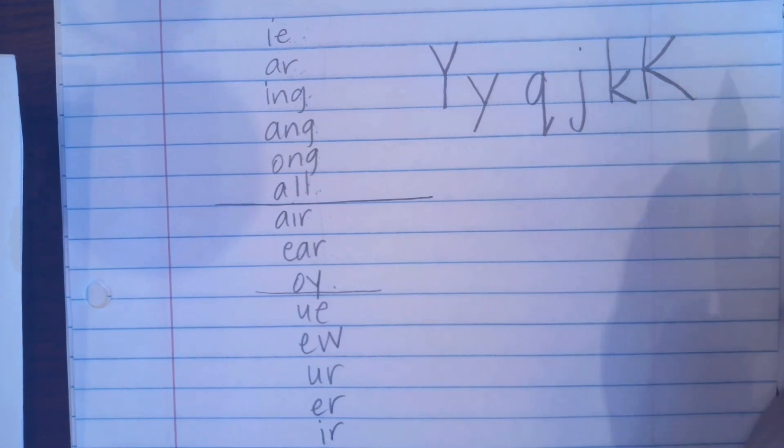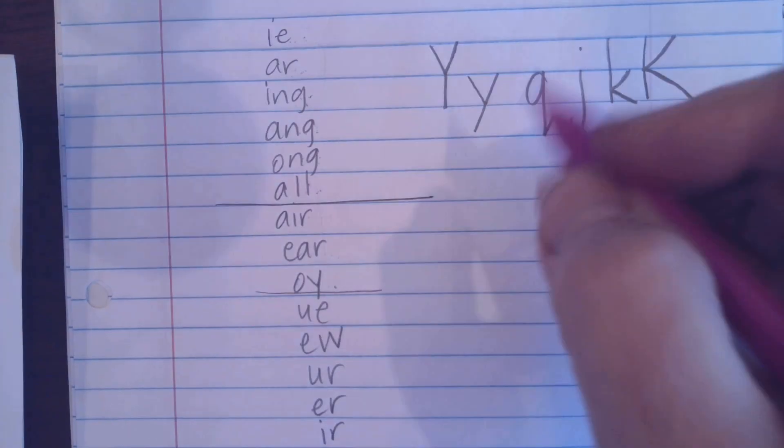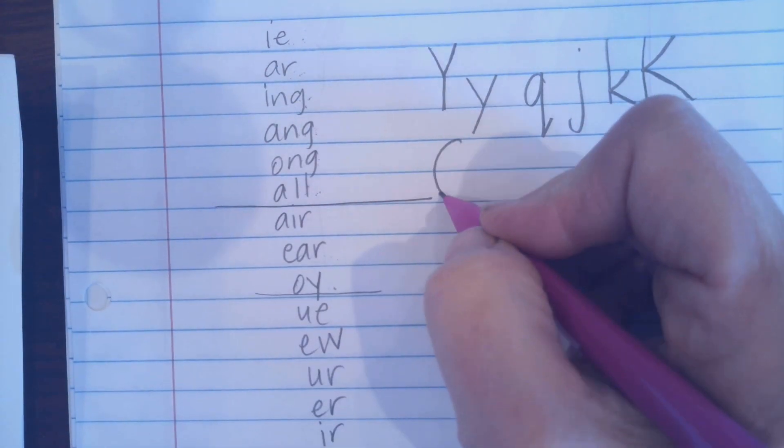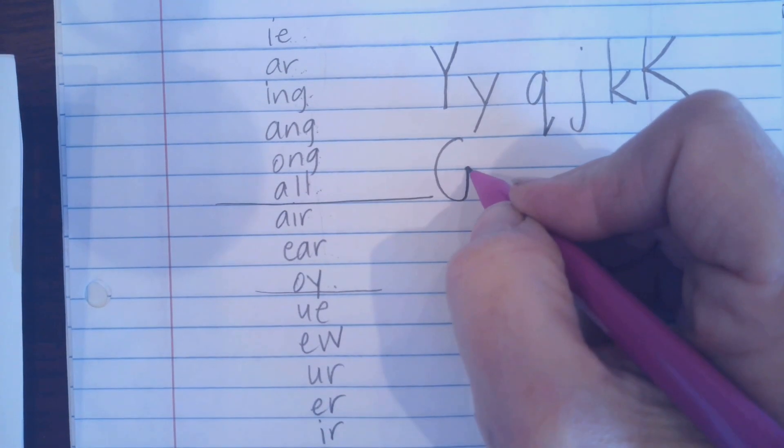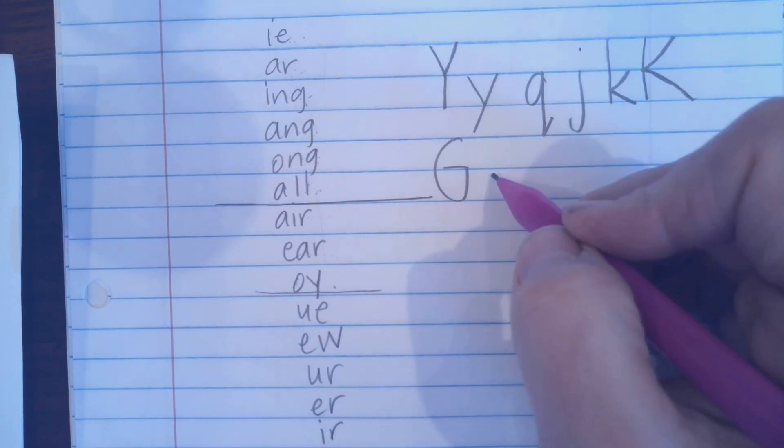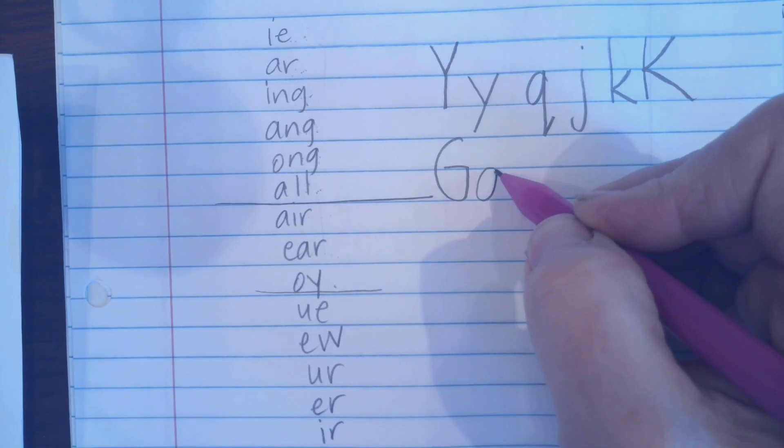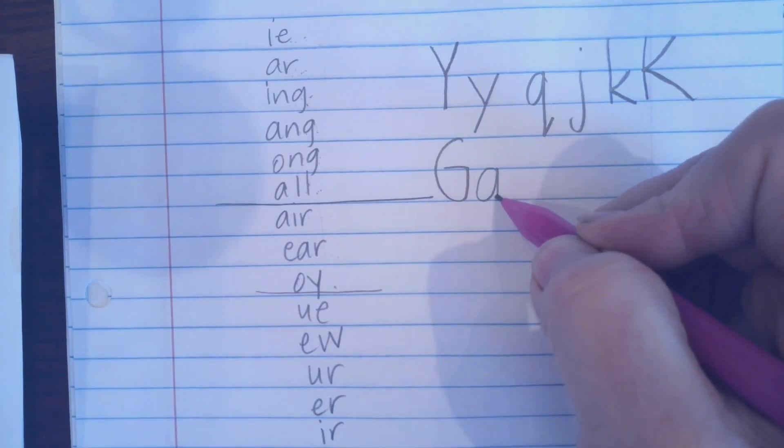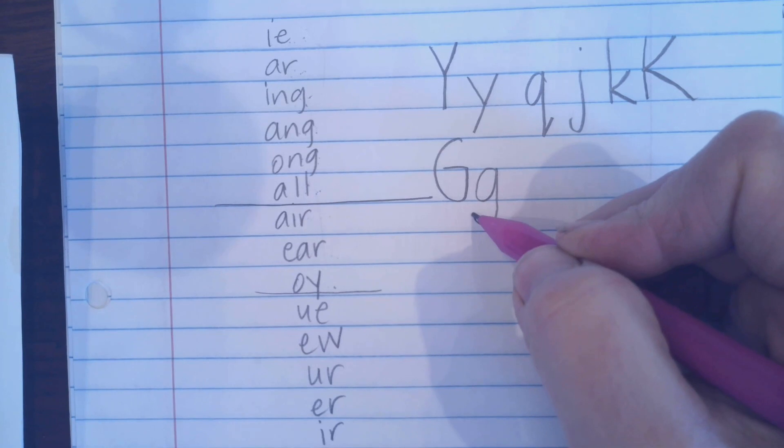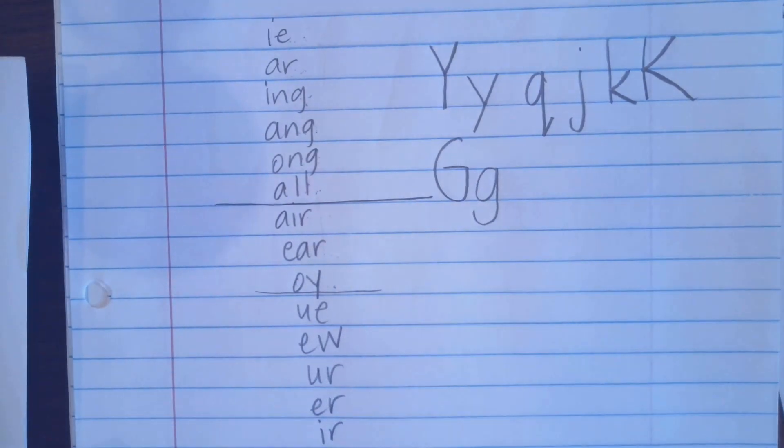Then for an uppercase G, we do a C shape. We come up and then cross. And for a lowercase, it uses half the line. We act like we're making an A, but then we go into the hot lava and we make a fish hook.